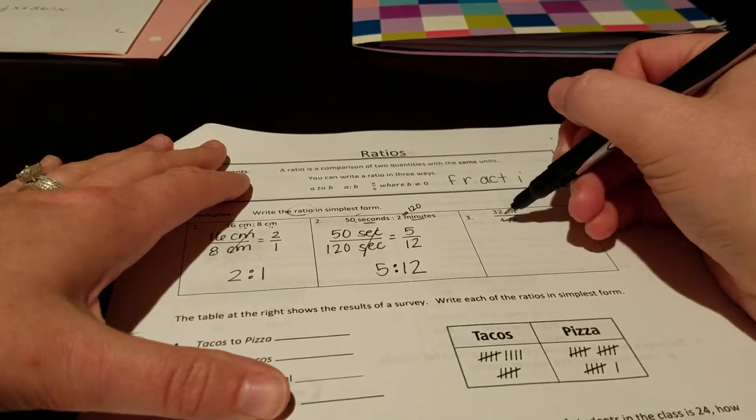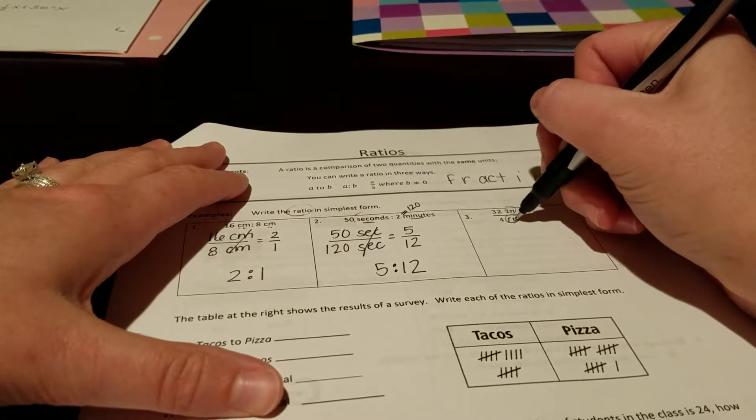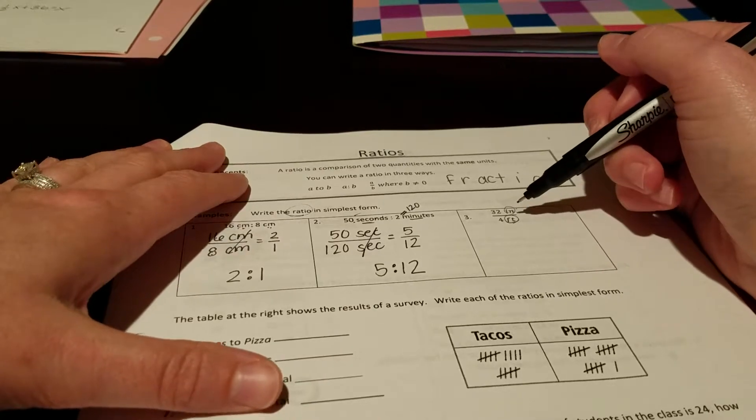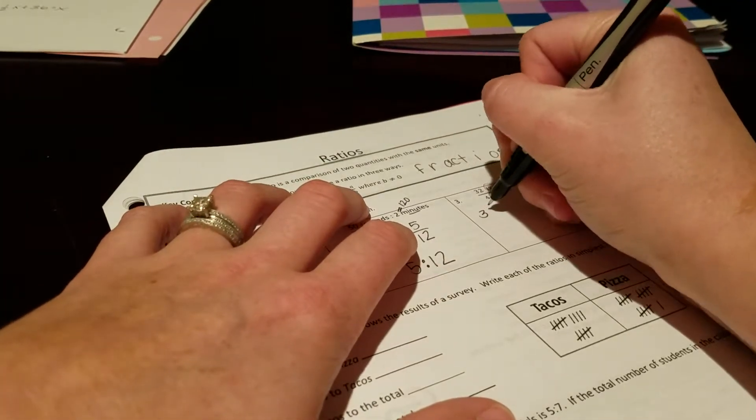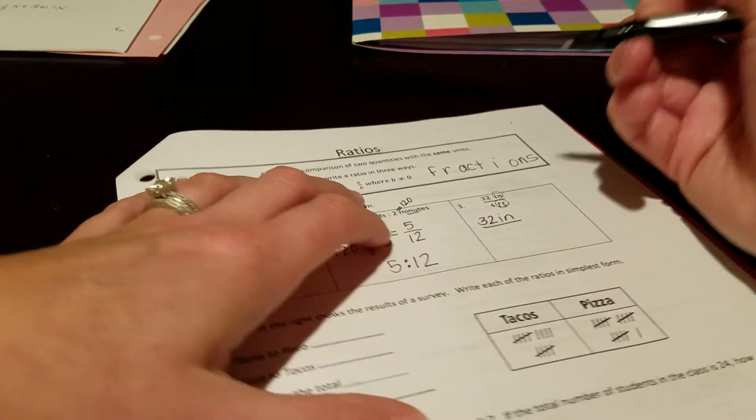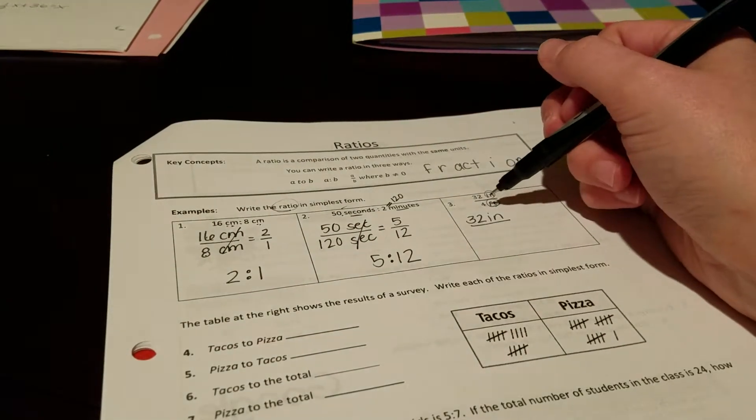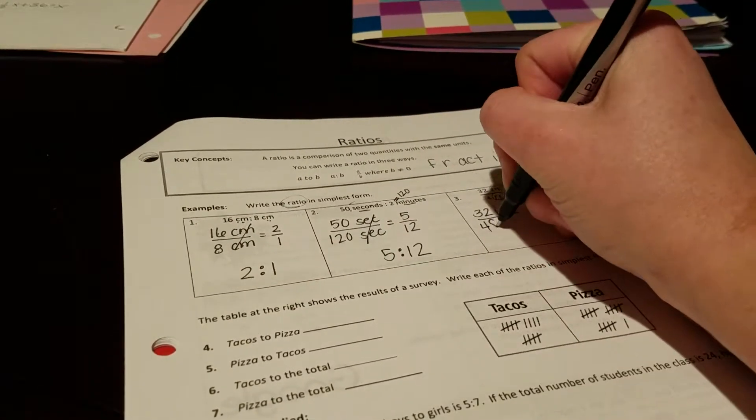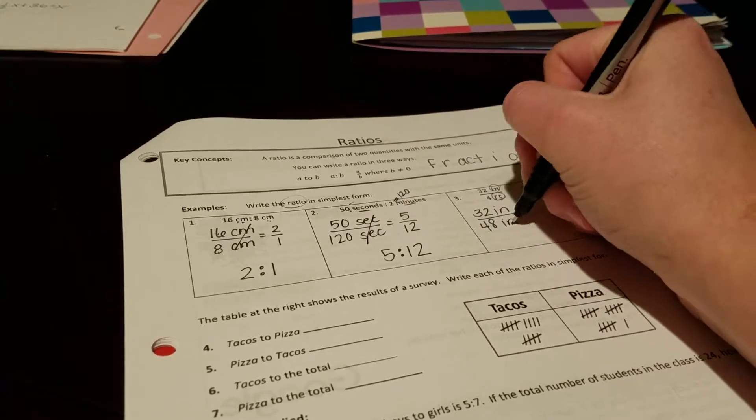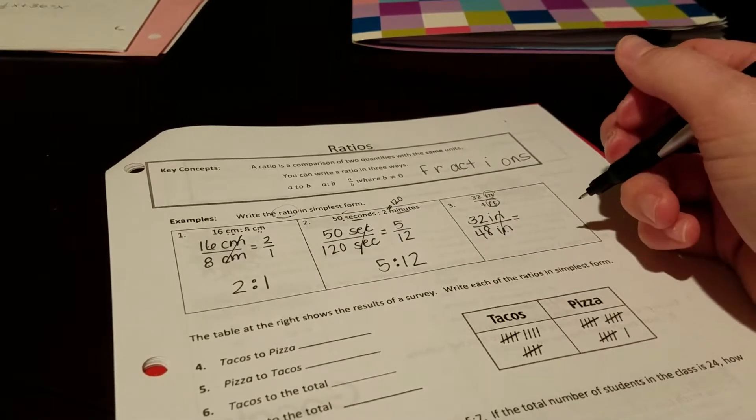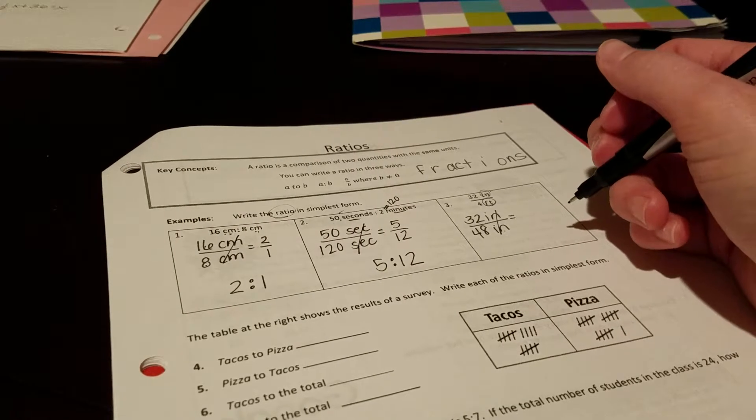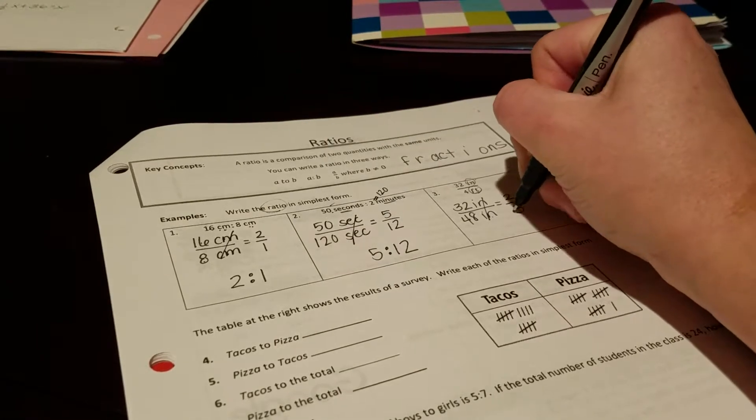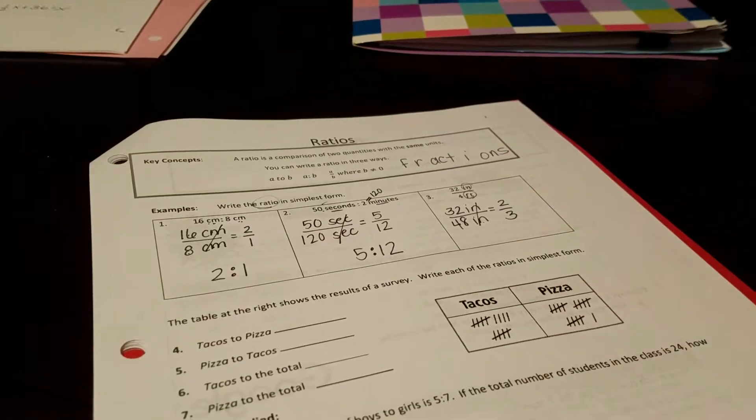This one I have 32 inches over 4 feet. Inches, feet. They're not going to cancel out this way. 32 inches will not convert into feet easily because it's not divisible by 12, so we're going to go to inches. In most cases we're going to convert into the smaller unit, so we're just going to make 4 feet 48 inches. Inches over inches cancel. And you are going to get 2 over 3.